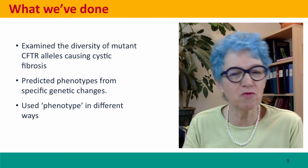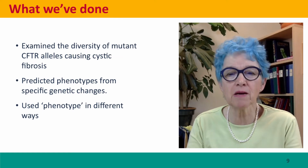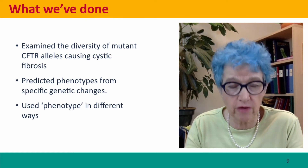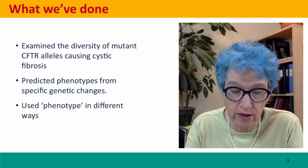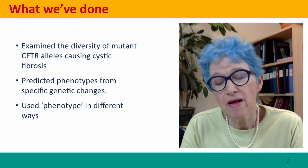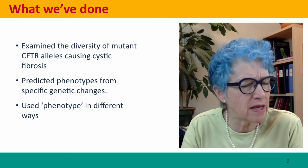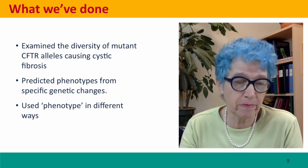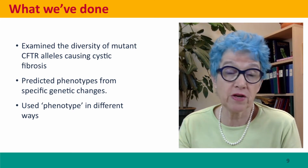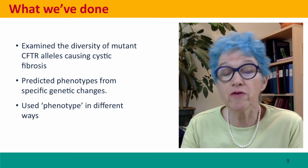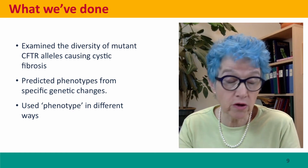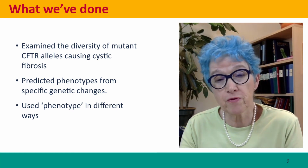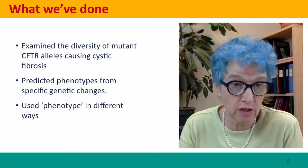So what have we done? We spent a whole lecture just thinking about the diversity of mutant alleles in one gene — the cystic fibrosis transmembrane regulator. We thought about phenotype in different contexts: we talked about the phenotype as messenger RNA, the phenotype as how much protein was produced, the phenotype as fertility, the phenotype as lifespan. And we could have talked about a lot of other aspects of phenotype that are caused by changes in CFTR as well.